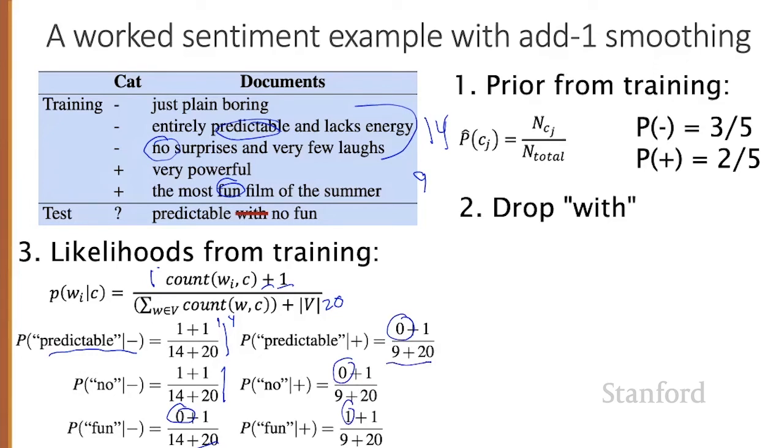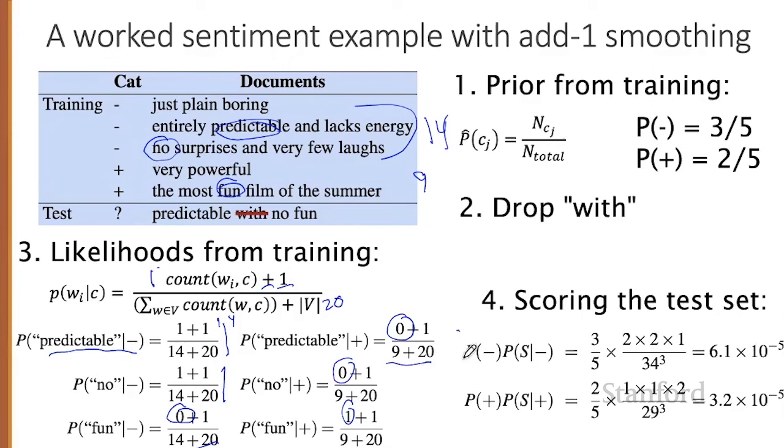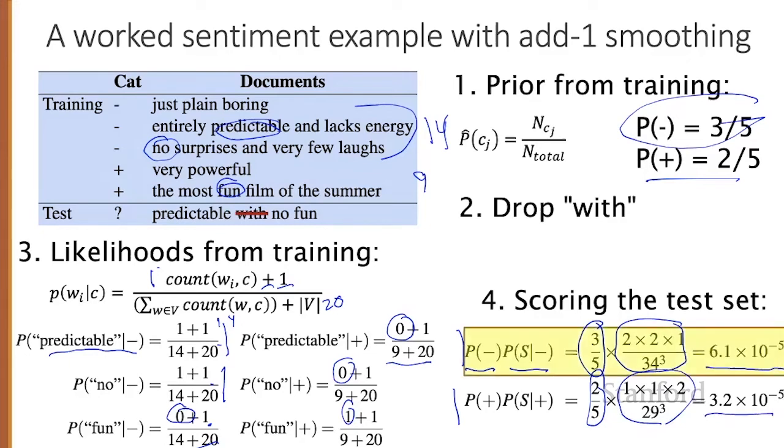So now we're ready. We've computed our six relevant probabilities. Of course, in real naive Bayes, you would have computed them for all the words because you don't know what's going to be in the test set. We're just cheating here a little. So let's look at the test set. We're going to compute the probability of the negative class and the probability of the positive class and take whichever is higher. And to compute each probability, we'll multiply the prior by the likelihood. So the prior for the negative class is three over five. We got that from up here. The prior for the positive class is two out of five. And then we multiply by, in this case, the three likelihoods multiplied together. Two out of 34 times two out of 34 times one out of 34. And for the negative class, we get a total estimate of 6.1 times 10 to the minus fifth. And we compute the score for the positive class in a similar way, but we get a lower probability, meaning that we choose the negative class as our prediction for this particular sentence predictable with no fun.